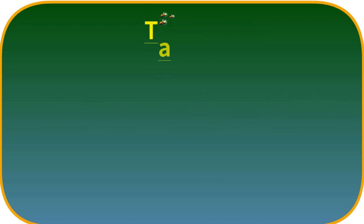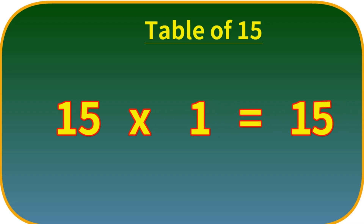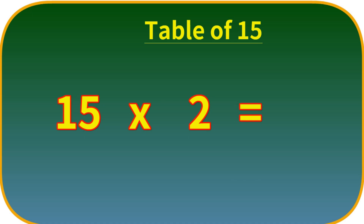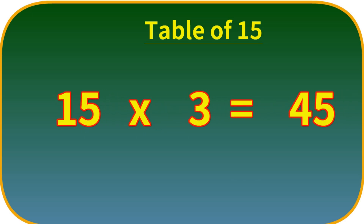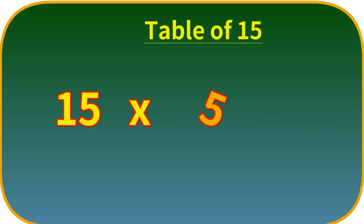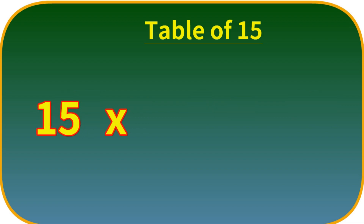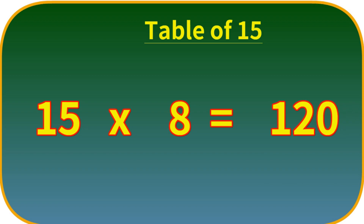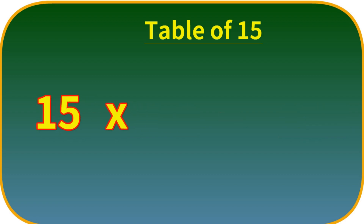Table of 15. 15 ones are 15. 15 twos are 30. 15 threes are 45. 15 fours are 60. 15 fives are 75. 15 sixes are 90. 15 sevens are 105. 15 eights are 120. 15 nines are 135.